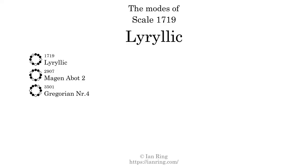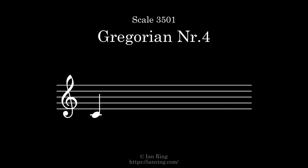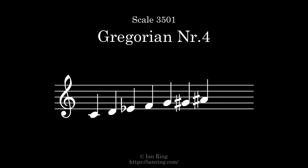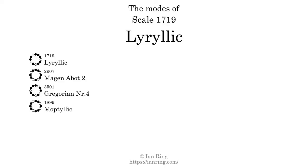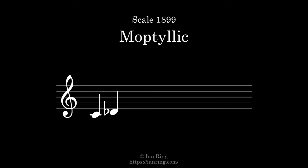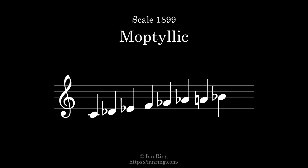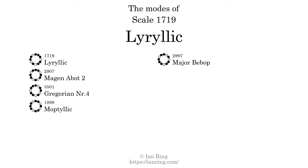The third mode is Scale 3501, also known as Gregorian number 4. It sounds like this. The fourth mode is Scale 1899, also known as Moptilic. It sounds like this. The fifth mode is Scale 2997, also known as Major Bebop. It sounds like this.